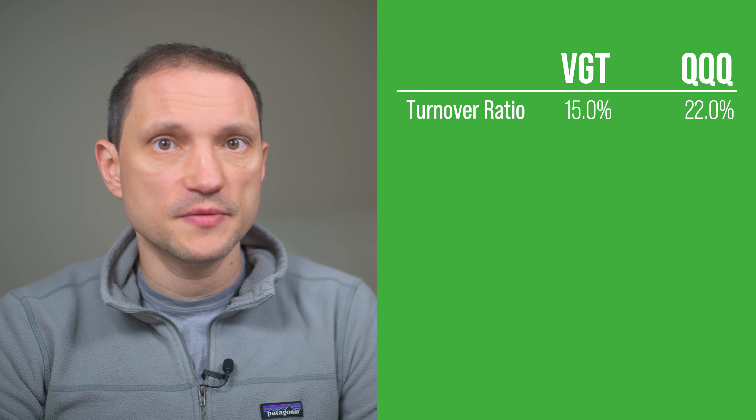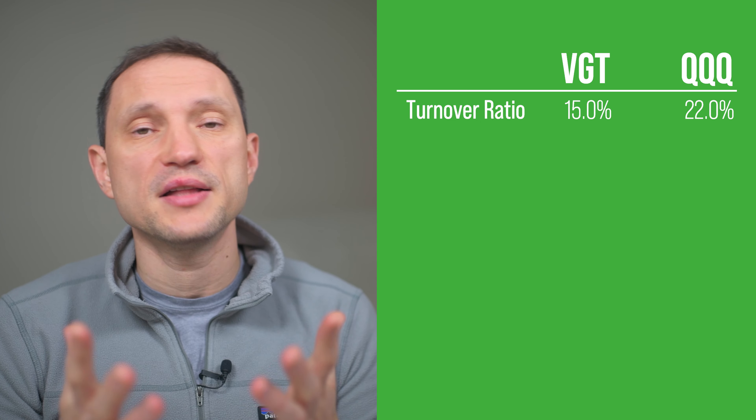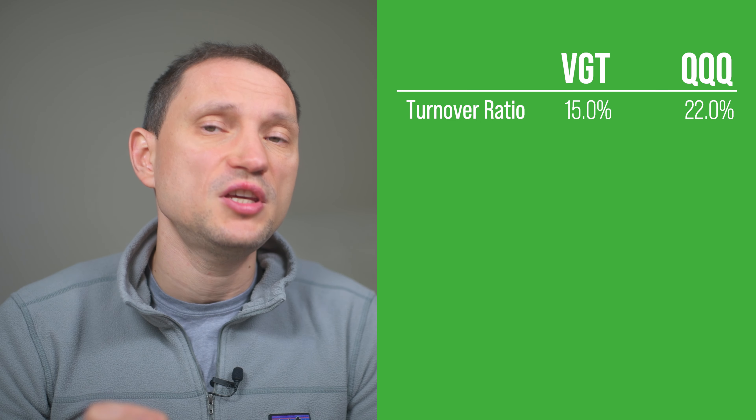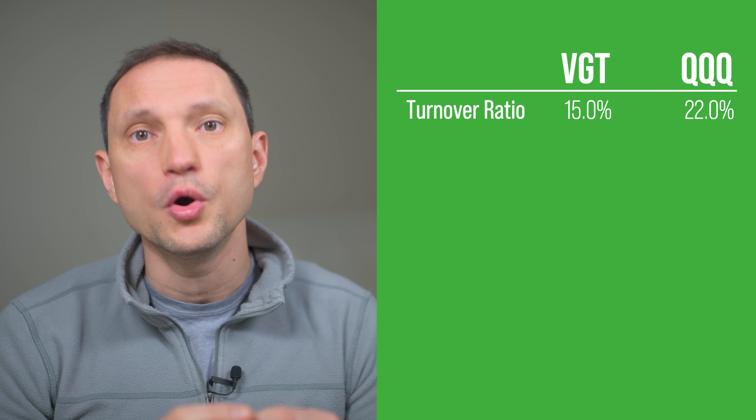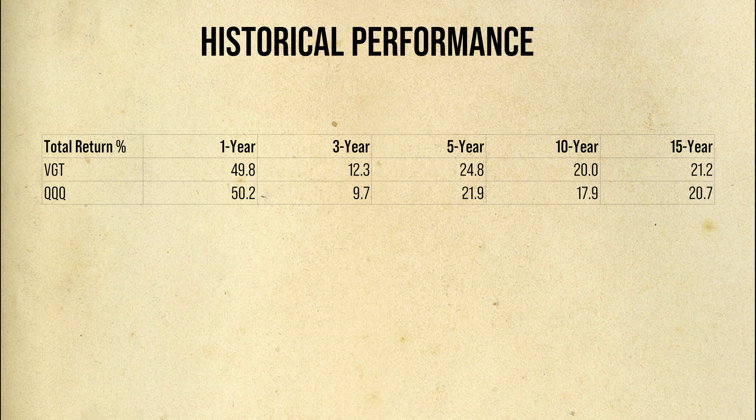Let's take a look at historical performance. Although historical performance doesn't guarantee future returns, there is a lot we can learn from it. Both VGT and QQQ have low turnover ratios, which is not surprising since both funds use a buy-and-hold strategy, with VGT slightly leading with a lower turnover ratio. A low turnover ratio means fewer stocks bought and sold throughout the year, whereas a high turnover ratio can create a drag on ETF performance. As for total returns, VGT and QQQ performed more or less on par for the past 15 years, with some periods of outperformance by VGT, especially over the past 5 or 10 years. This is impressive given that VGT does not include high-flyers like Tesla, Google, and Meta.